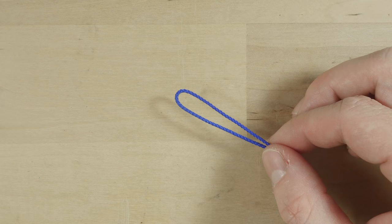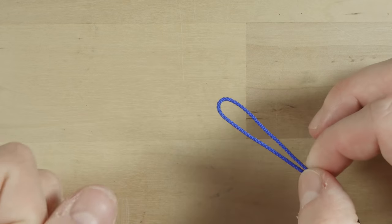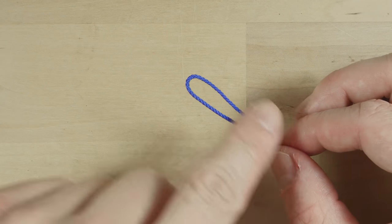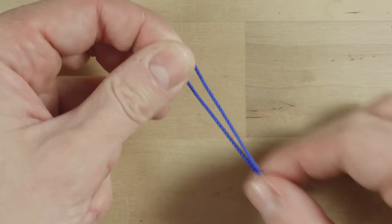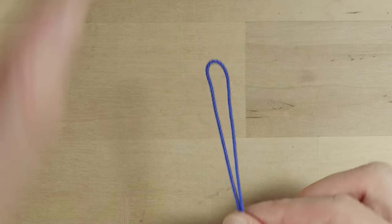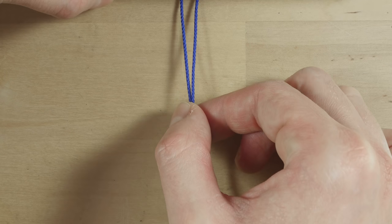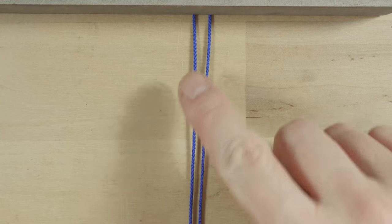To start tying I'm going to take my short cord. In my case, this one is 4 feet long. I'm going to fold it in half and feed the bite under a heavy object, just to hold it in place.